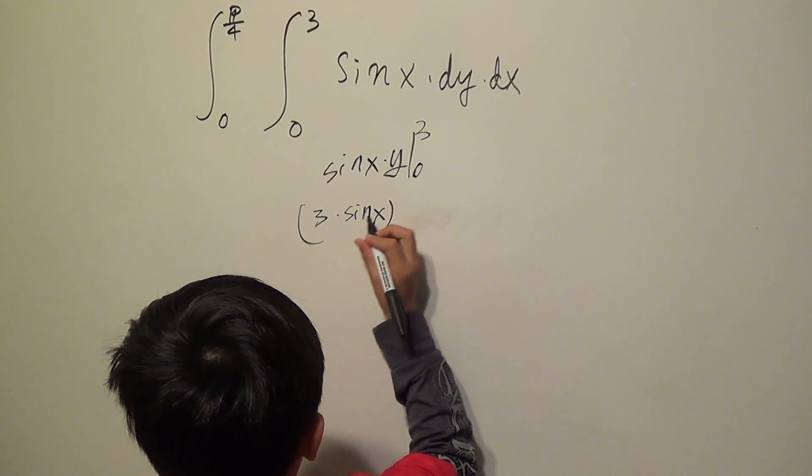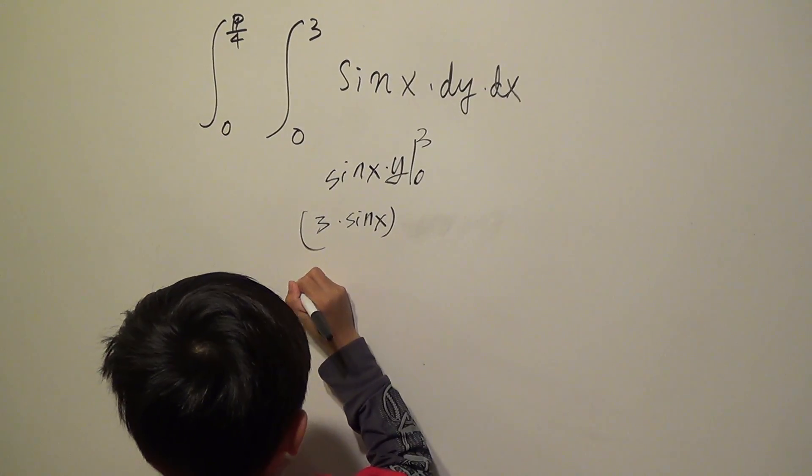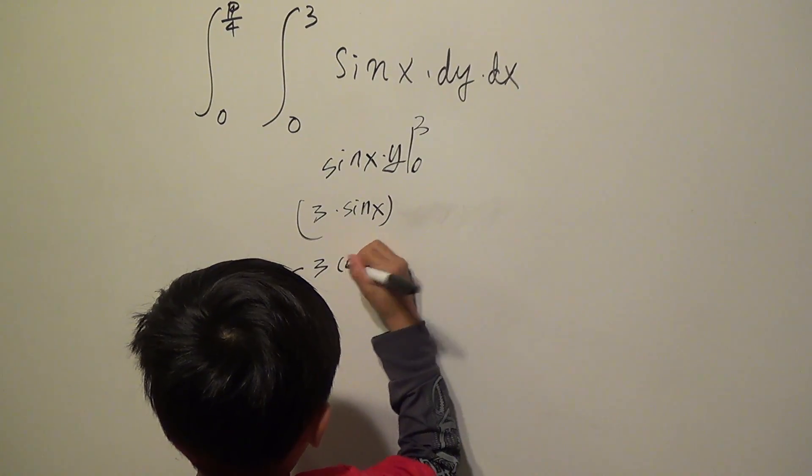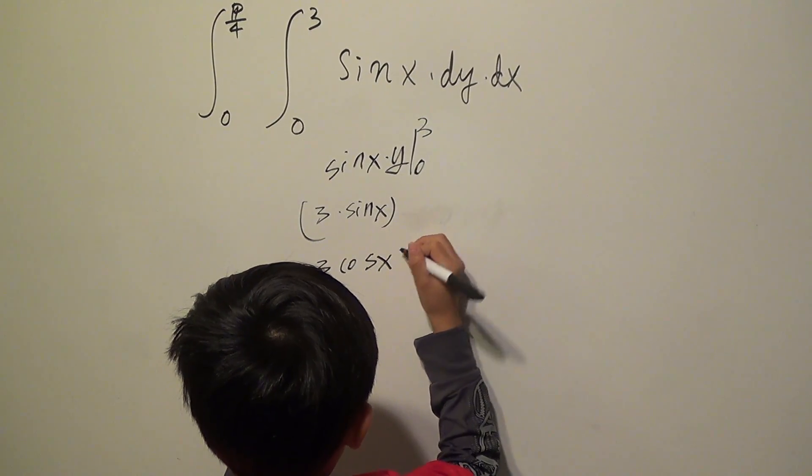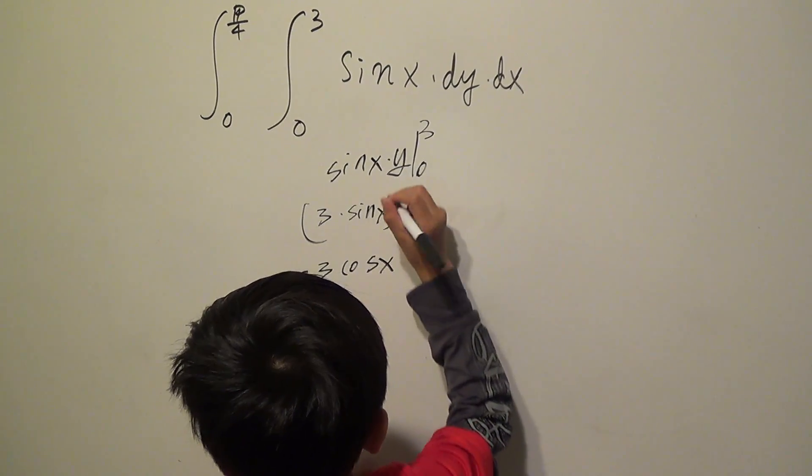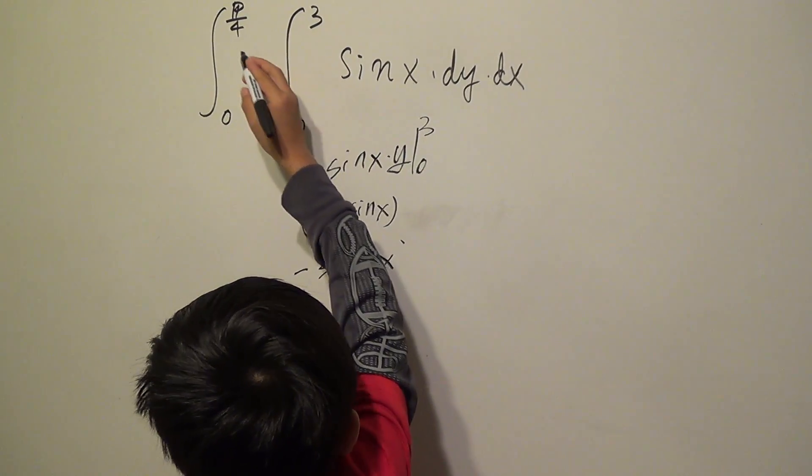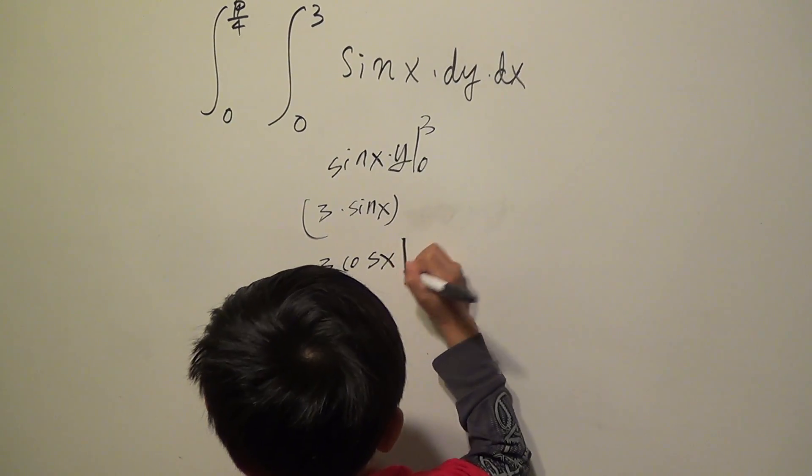And now, because of this sin has to go up, so minus cos, and then just like this and this, this has to do this.